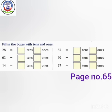Here first we have 28. We have to write 1s here and 10s here. Now how many 10s do we have? We have 2 tens. How many 1s do we have? We have 8 ones. So here we have 2 tens and 8 ones.